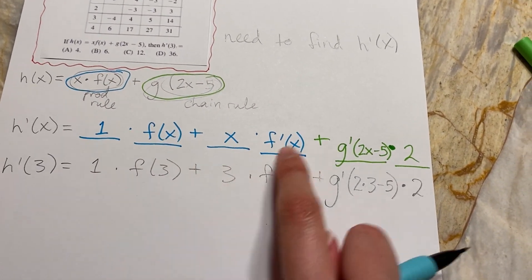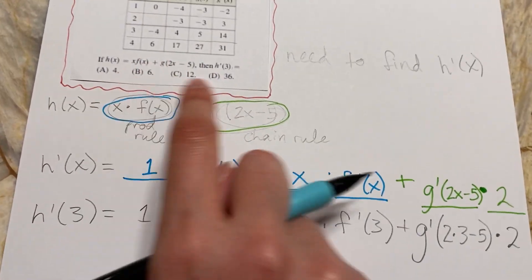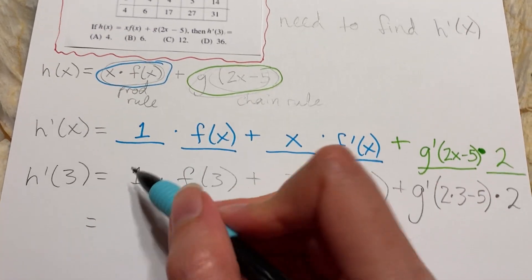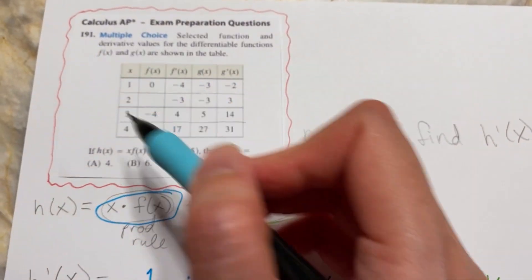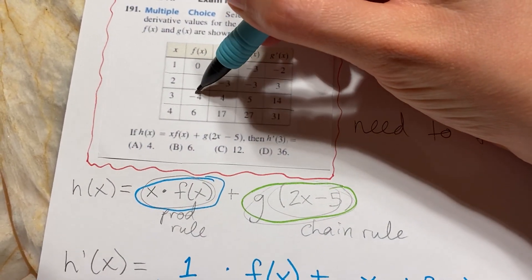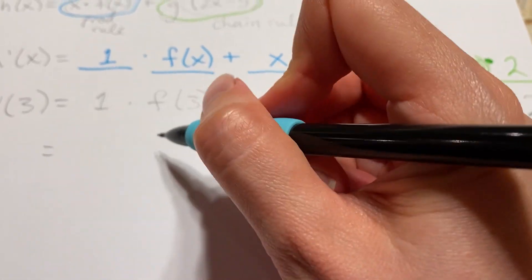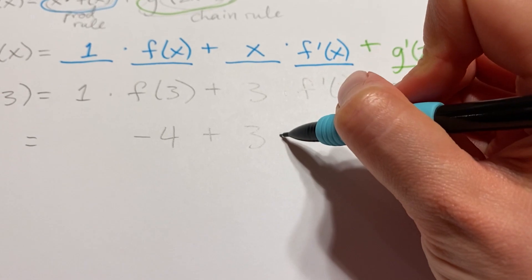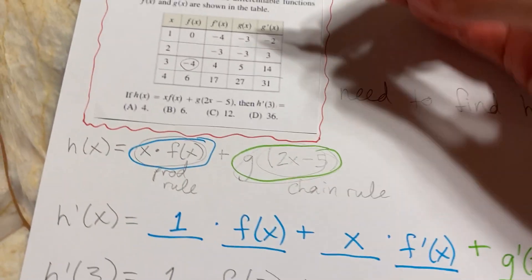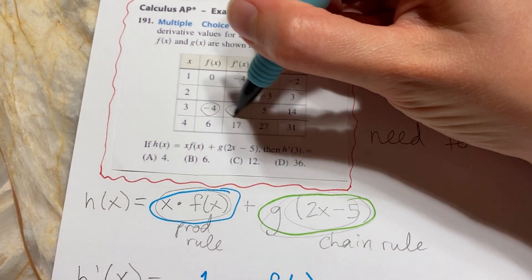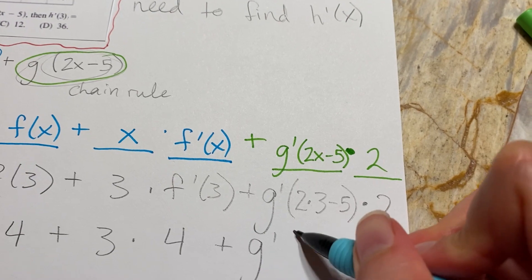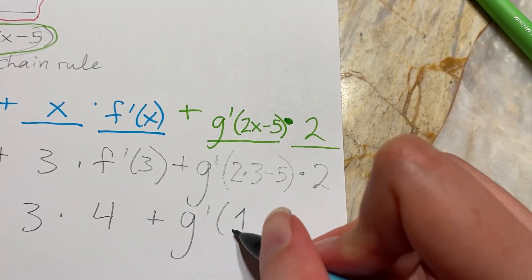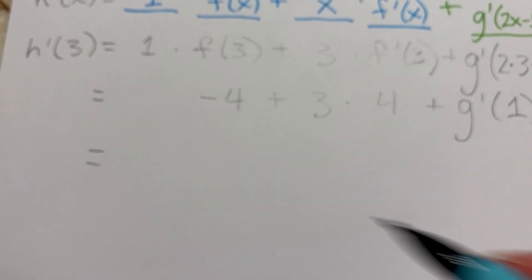We substituted 3 anywhere we saw an x, and now we just simplify to get a number and match it with a multiple choice answer. The 1 we can drop. For f(3), we look it up in the table — that's negative 4. For f'(3), that's 4. And 2·3 - 5 = 1, so we need g'(1) from the table.